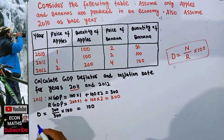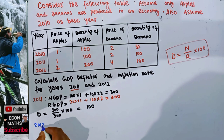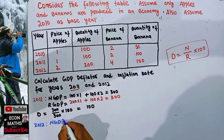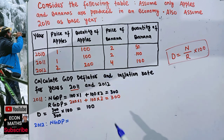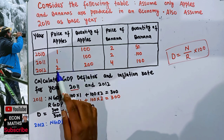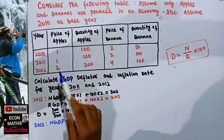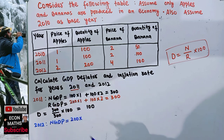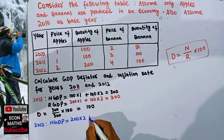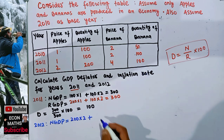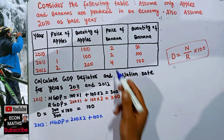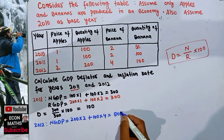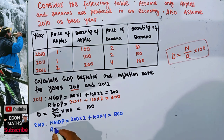Now let's calculate for 2012. The nominal GDP for 2012 equals current price times current quantity. The current price of apples is 2 and current quantity is 200, giving 400. The quantity of bananas is 100 and price is 4, giving 400. So nominal GDP for 2012 equals 400 plus 400, which is 800.